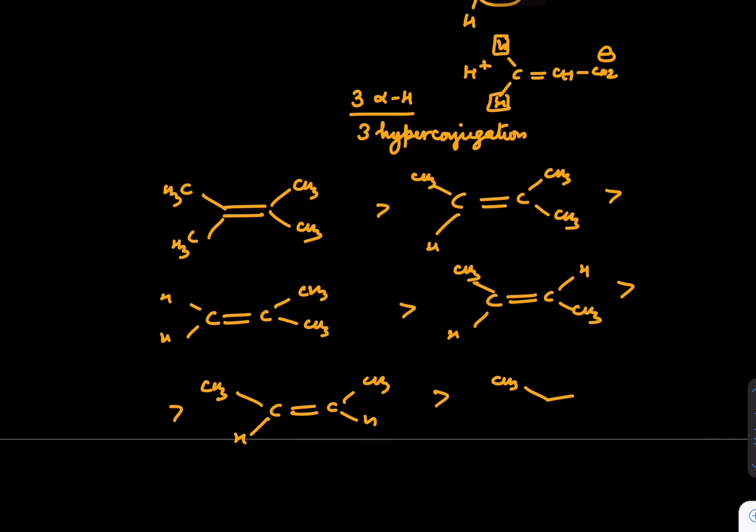And this is more stable than just 3 alpha hydrogen, and it is more stable than 0 alpha hydrogen. So this is the sequence of stability of alkene.